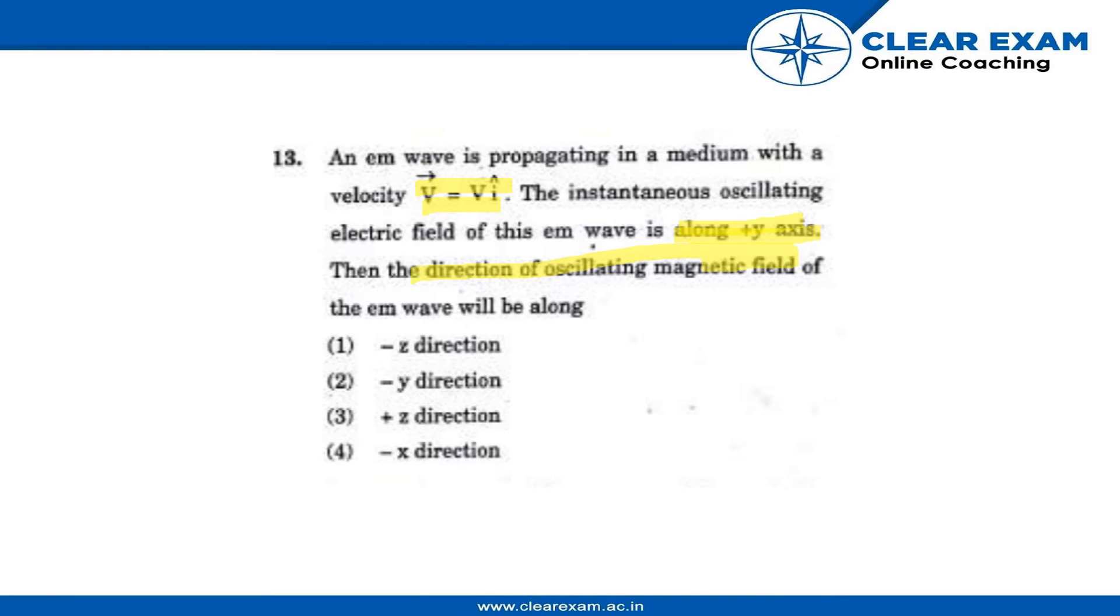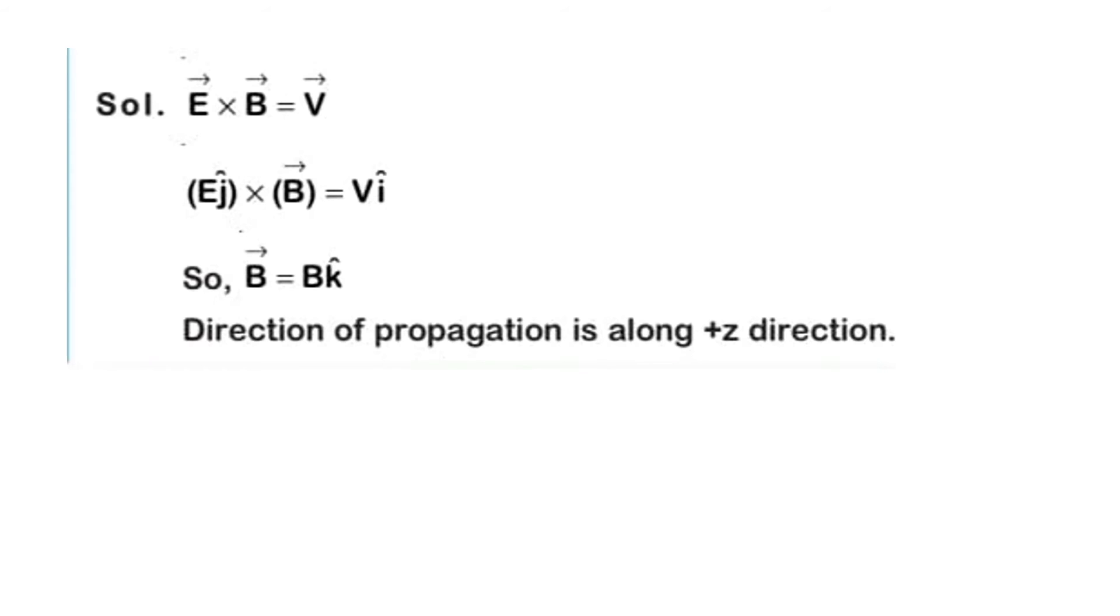Let's solve this. We know that E × B = V (the cross product of electric and magnetic fields gives the direction of propagation). As given in the question, V = Vi. We also know that the electric field E = Ej (along y-axis). When we substitute these values, Ej × B = Vi.